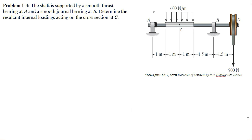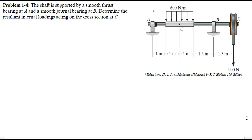Hello everyone. In this video we are going to solve problem number 4 from the chapter of Stress, from the book Mechanics of Materials by R.C. Hibbeler. In this problem it is required to determine the resultant internal loadings acting on the cross-section at point C.